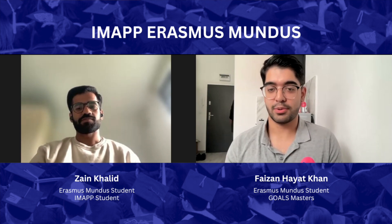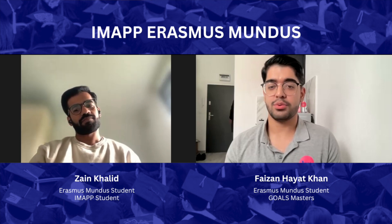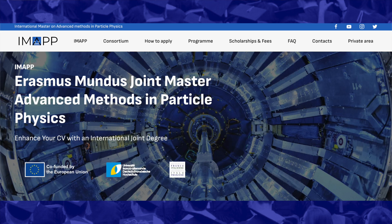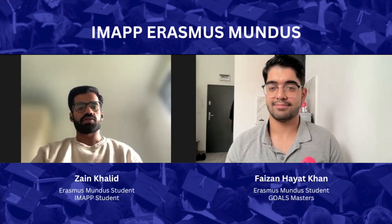You are currently in the Erasmus Mundus Joint Master's Program and your program is called IMAP. Can you share a little bit about the program and the requirements for getting into it? The program is IMAP — Advanced Methods in Particle Physics. The requirements are you have to have a bachelor's degree in physics. The program is based mostly on data science, particle physics, and mathematics.